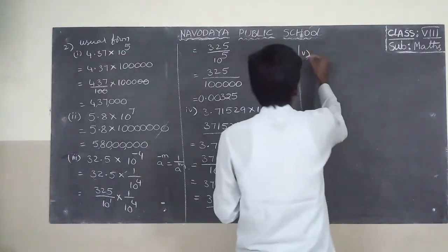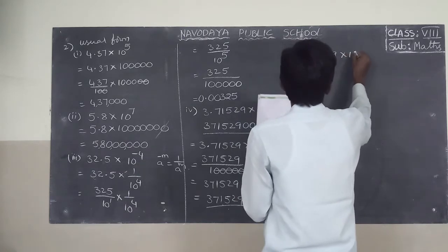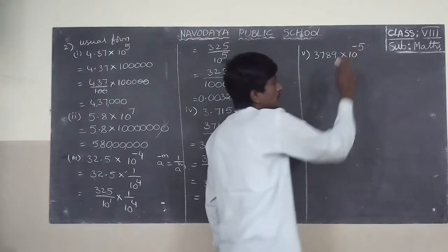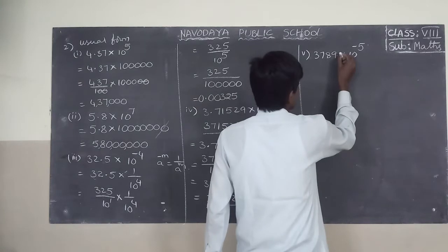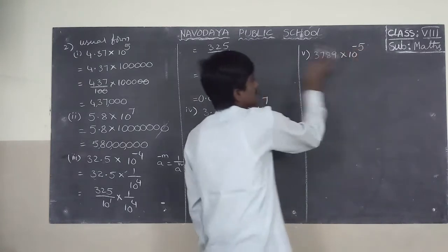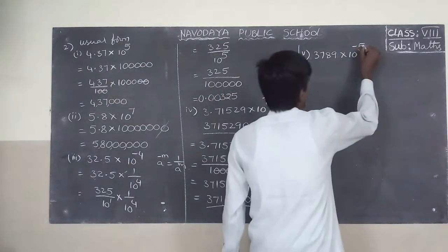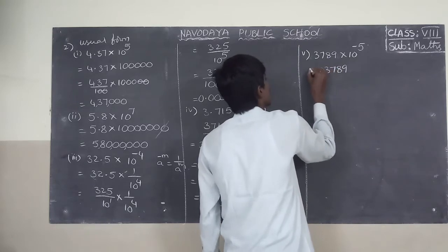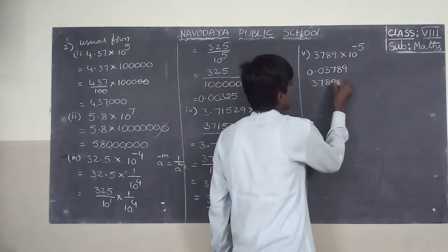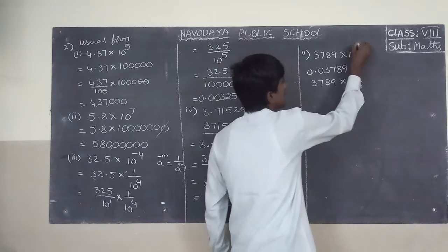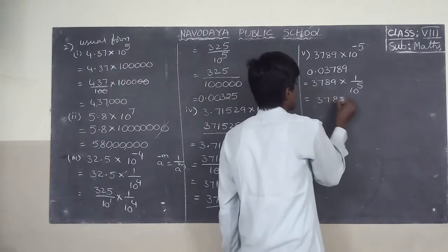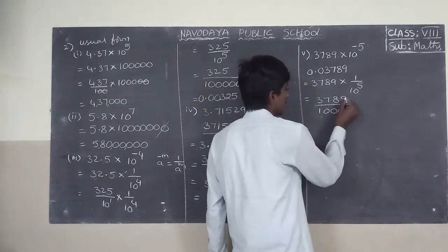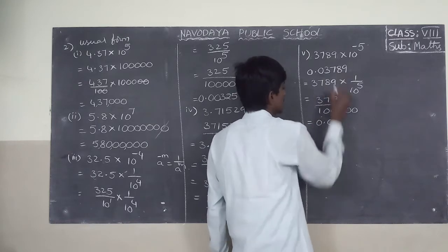Fifth one: 3789 into 10 to the power of minus 5. Here minus 5 is there, so the decimal point moves left. There is no decimal point, so you take the zero. Minus 5 means count 5 digits: 1, 2, 3, 4, 5. So 3789 into 1 by 10 to the power of 5. 5 zeros after 1. So the answer is 0.03789.